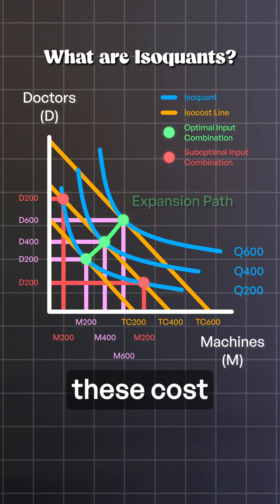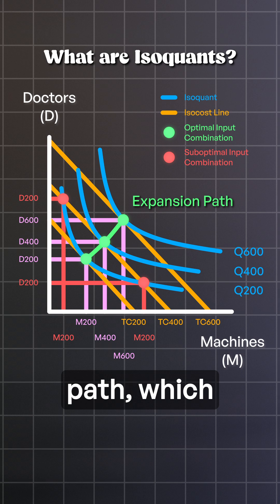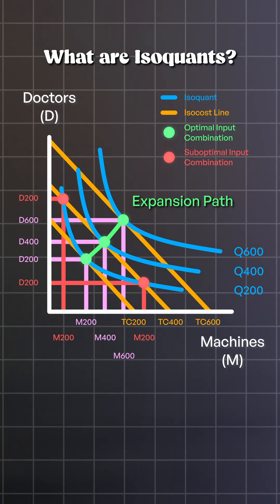Now, if we connect these cost-minimizing points across different isoquants, we get the expansion path, which shows how to scale up care while keeping cost as low as possible.